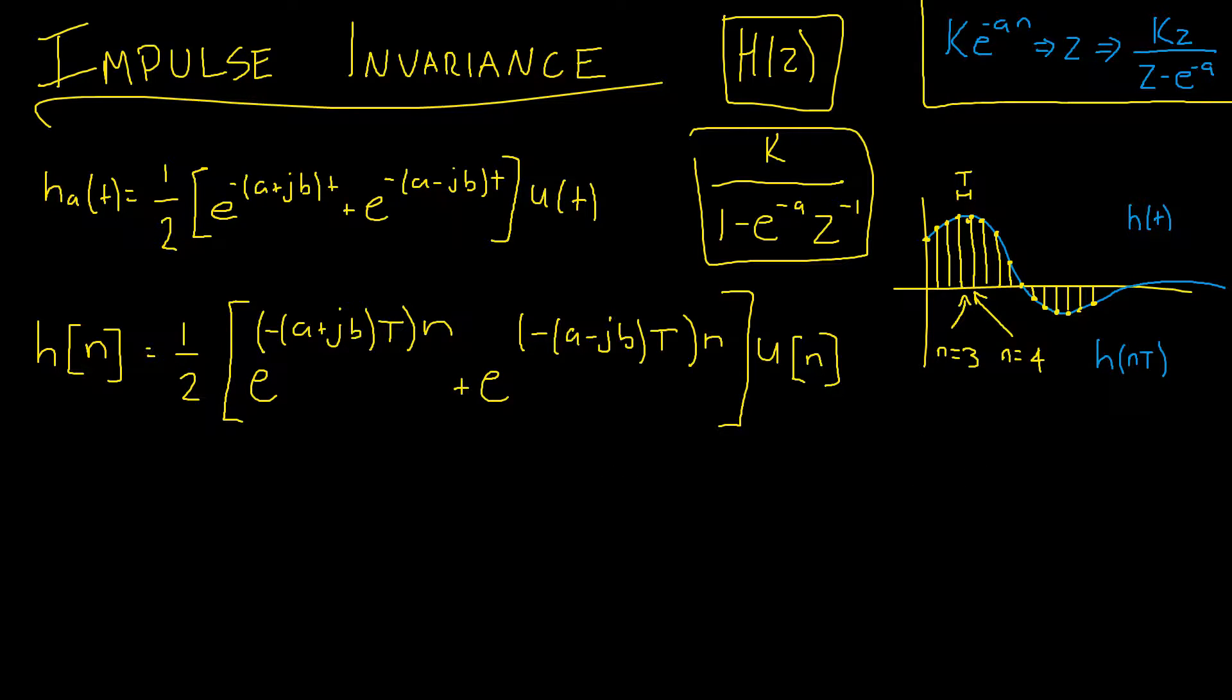Okay so now we've got our equation in terms where we can take the z transform. So taking the z transform will give us h of z, and then that's equal to the half stays out the front, and then inside we can say that the k term here is a value of 1.